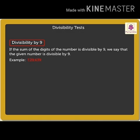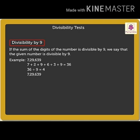For example, 729,639. When we add the sum of all digits — 7 plus 2 plus 9 plus 6 plus 3 plus 9 — we get 36, and 36 is divisible by 9. So we can say that 729,639 is divisible by 9.